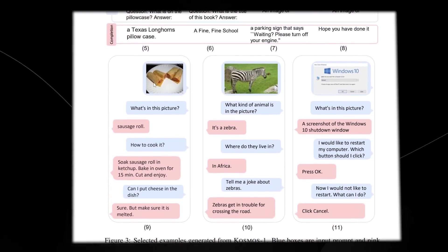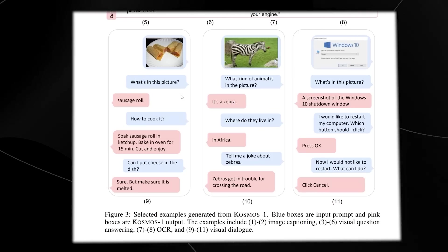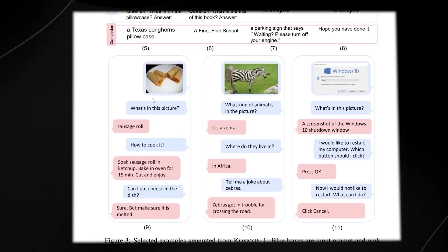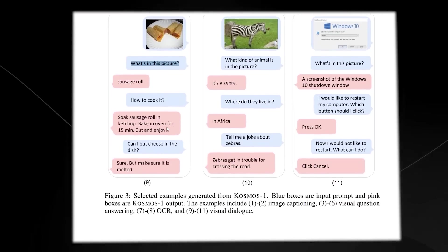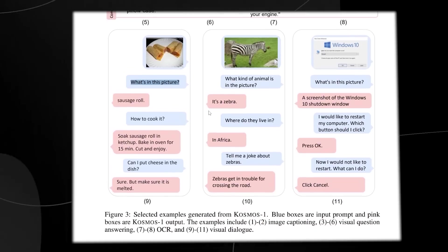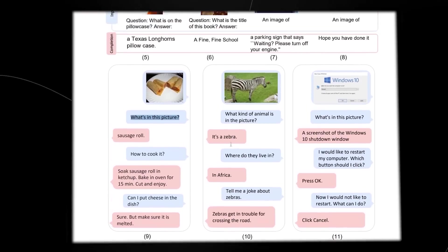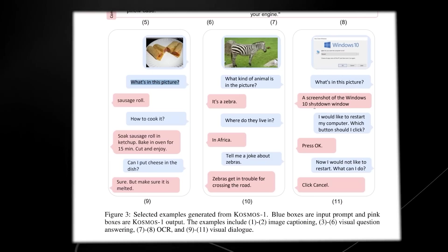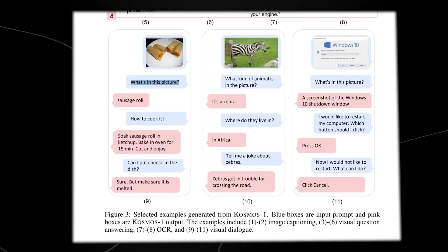Now, what we can see here also is the multimodal model where we're combining images and text to create a more interactive and much more enjoyable conversation between GPT-4 and the user. You can see it says what's in this picture, a sausage roll. How do I cook it? Soak the sausage roll in ketchup, bake in the oven for 15 minutes and enjoy. You can then see right here, it's being asked basic questions about this animal. And of course, it's giving a lot more information. And this is where things get interesting because this shows the complete utility of GPT-4.